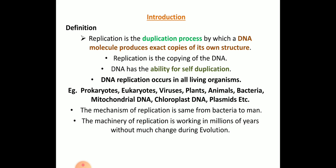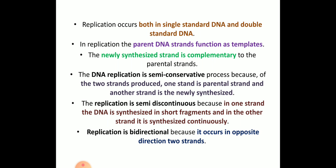The machinery of replication has been working for more than millions of years without much change during evolution. If the DNA replication changes due to mutation, it leads to evolution or change in the organism. That is why in humans, DNA replication has been taking place in the same mechanism for millions of years. Replication occurs in both single-stranded and double-stranded DNA, and the parental strand acts as a template — that is the semi-conservative method.